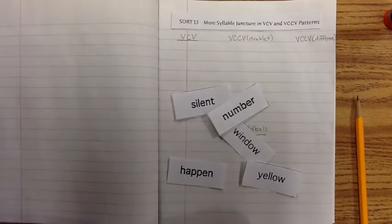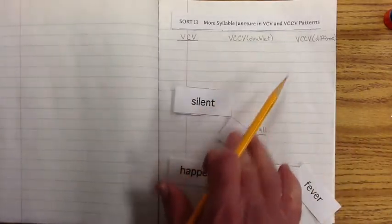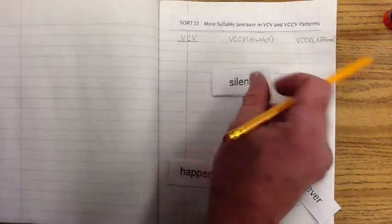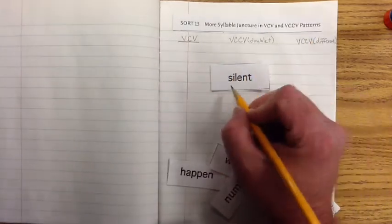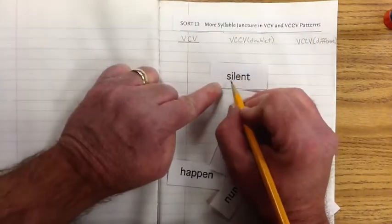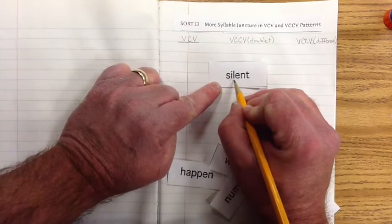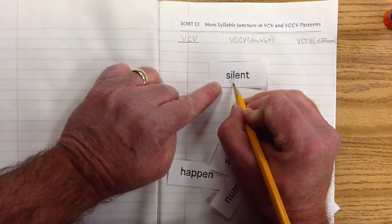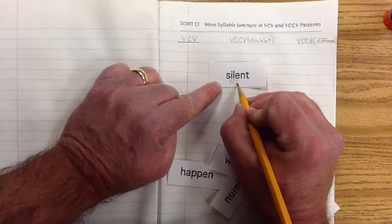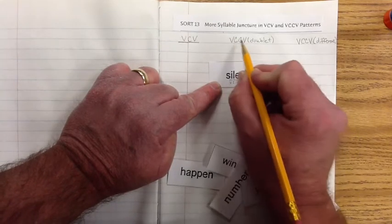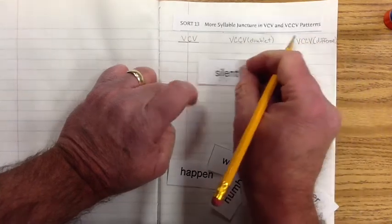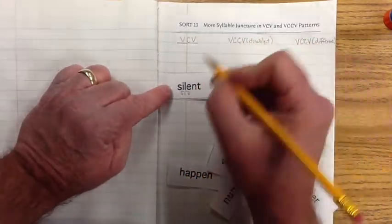Let's start with the word silent. Let's take a look at it and see what pattern it fits under. Here we have a vowel. All of our exemplars start with vowels, so let's start there. We have a vowel, we have a consonant, and then we have a vowel.